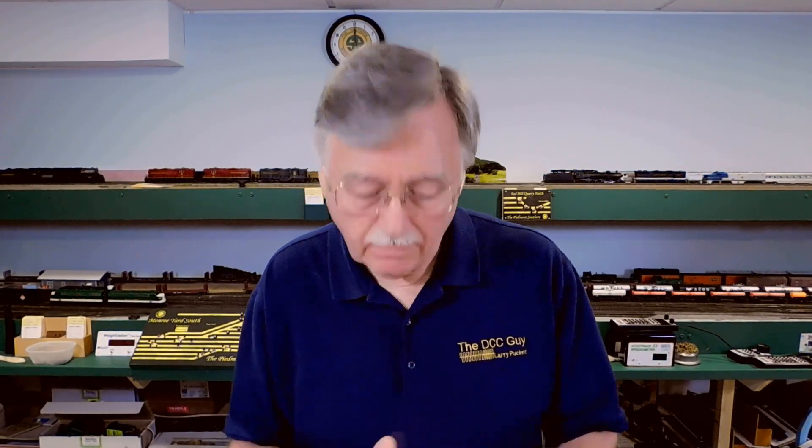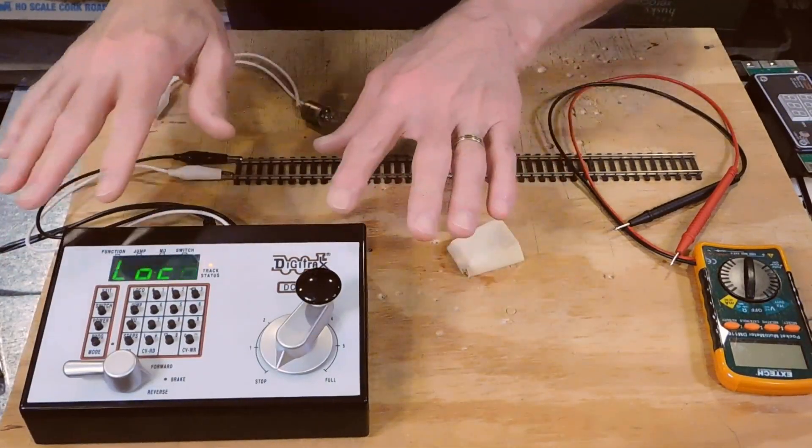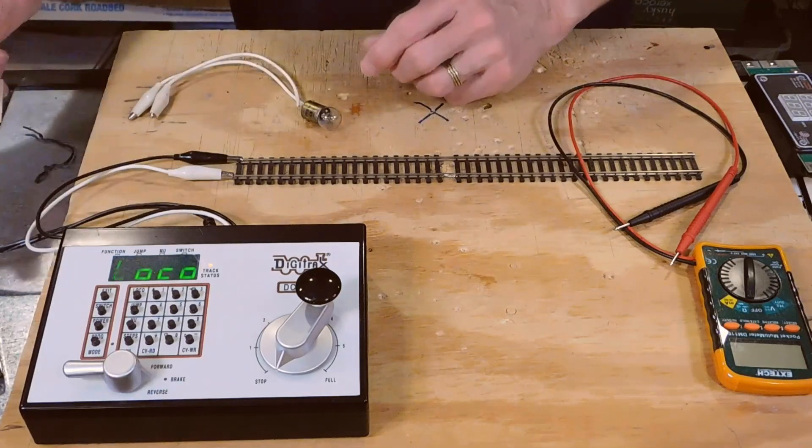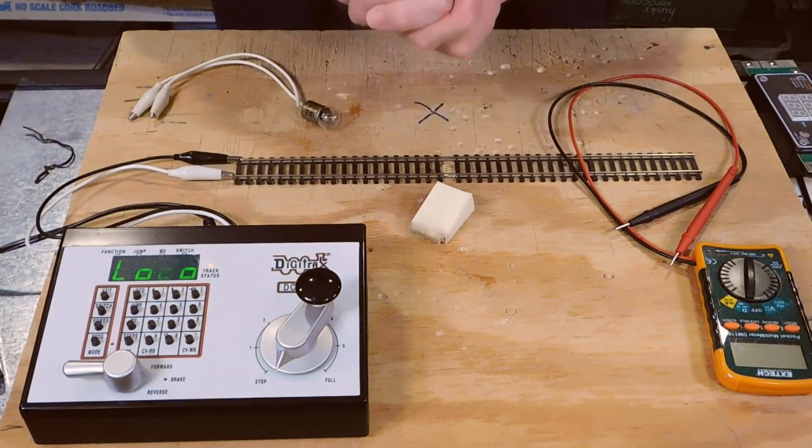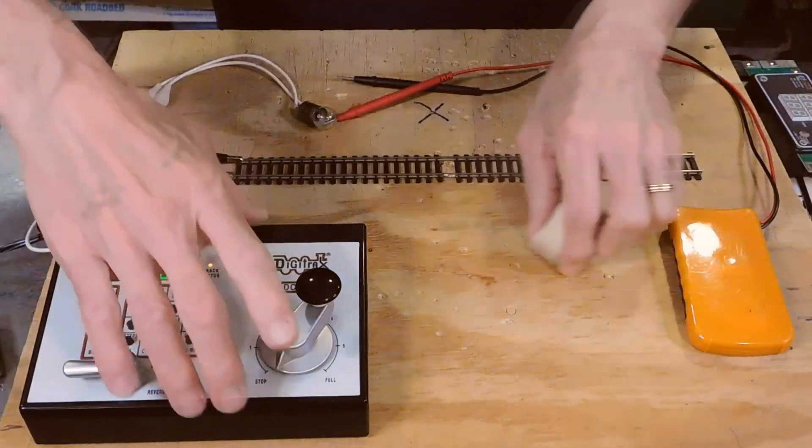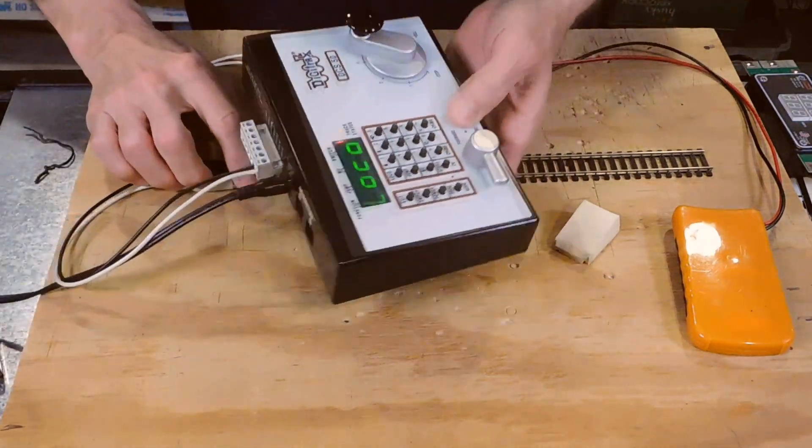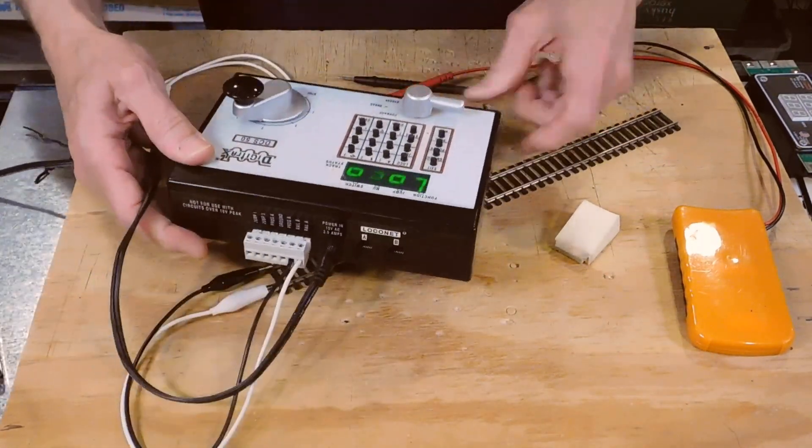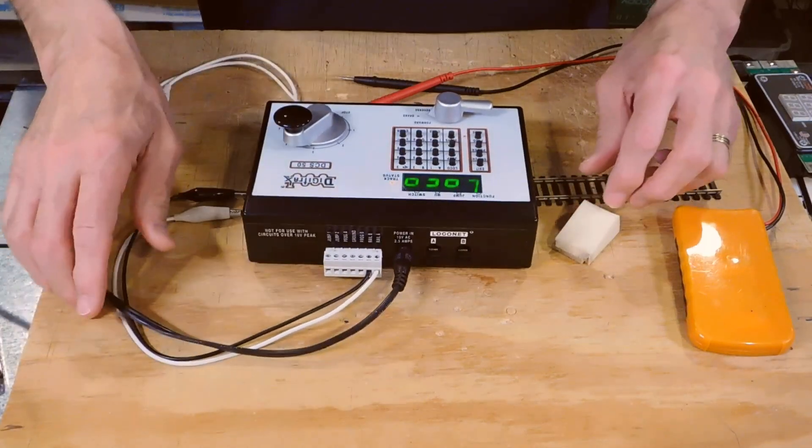But what I want to show you now is a way to actually measure the correct track power or track voltage. This applies, as far as I know, only to Digitrax. Let me focus down here on the workbench and I'll show you what I mean. What I have here is a Digitrax Zephyr. It's the old DCS 50 version. What you can do with these is, if you take a look here on the back, we have the standard connector set up that Digitrax uses.